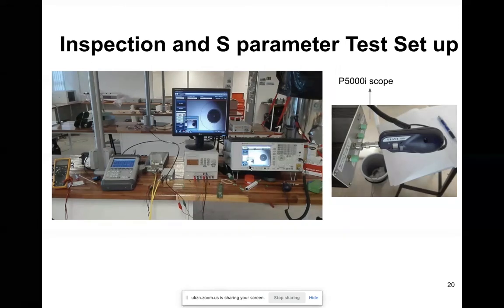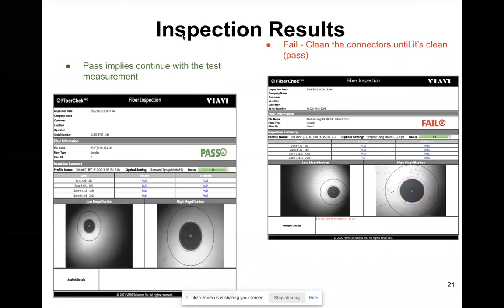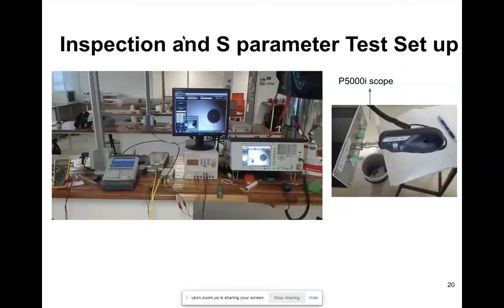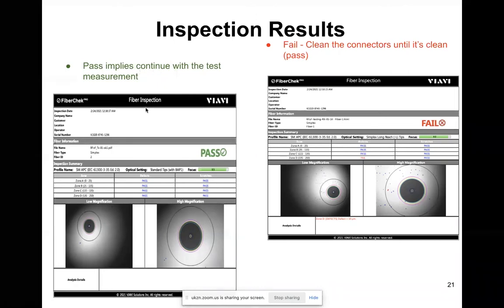I can see what's happening on the interface of the connectors. For S-parameter measurements, I'm using a Rohde & Schwarz instrument to characterize the S-parameters on the RFoF fiber. When you inspect the RFoF fiber connectors or the fiber cables, you will get a result similar to this — either a pass or a fail. If you get a pass, the connectors are clean and you can proceed to the next step.